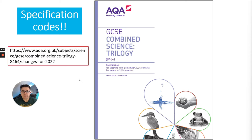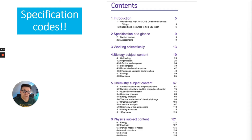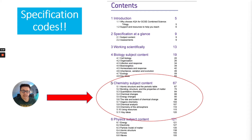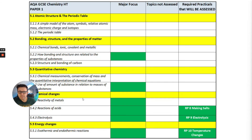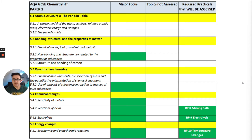If you type into Google 'AQA combined science specification,' you can download it — it's like the teacher's bible. If your teachers haven't given you a checklist, you can use it as one. Inside, you can see all the content for combined science: biology, chemistry — the bit we're interested in today — and physics. This is what I mean by specification code: 5.7 is organic chemistry, 5.7.1 is carbon compounds as fuels and feedstock, and it separates further into another hierarchical code.